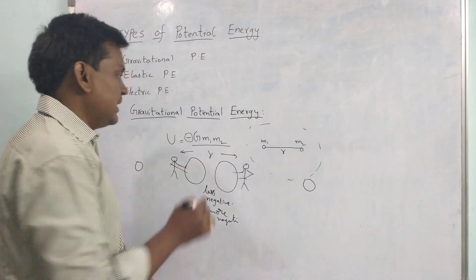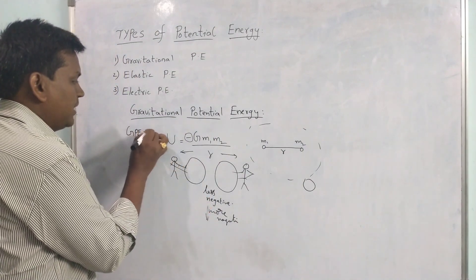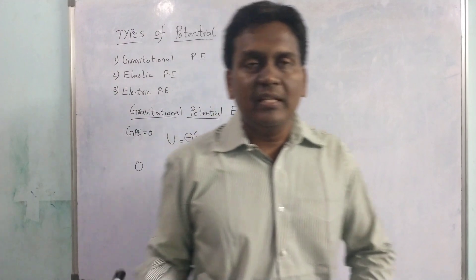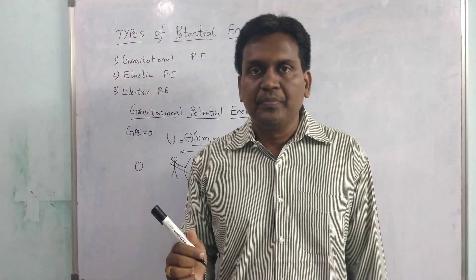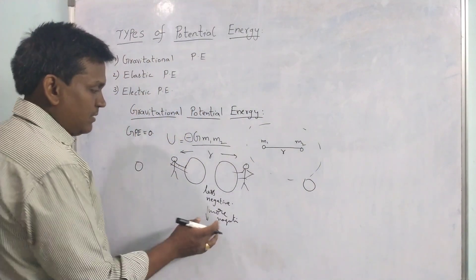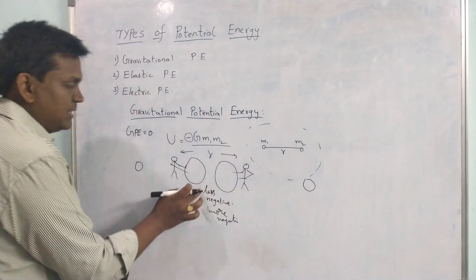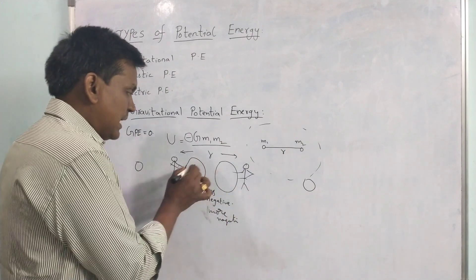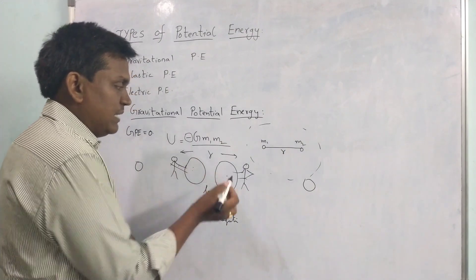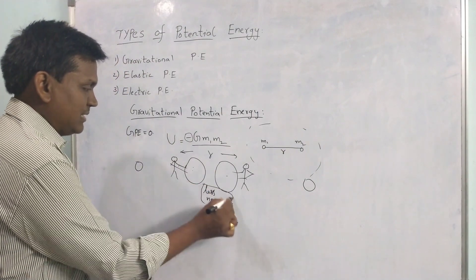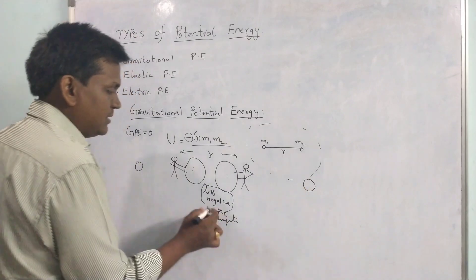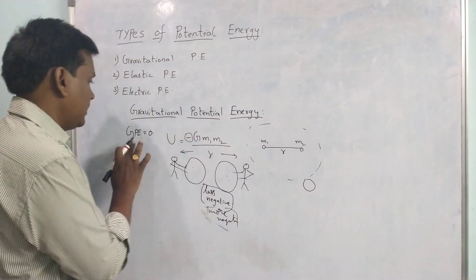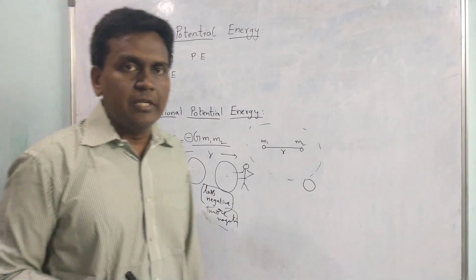If the masses are separated to some infinite distance, then the GPE will become 0. When the force between the two masses is at infinite distance, the gravitational potential energy will be 0. If they are somewhat close, it will be more negative. If they are very close, the work done by us will be positive and the work done by these two bodies will be negative. When they are separated to infinite distance, the gravitational potential energy becomes 0.